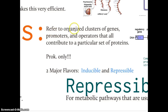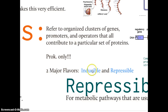An operon is made of a combination of structural genes that actually produce the protein, promoters which are DNA sequences that serve as attachment points for RNA polymerase, and operators — a new term — which are sequences of DNA within the promoter to which a special regulatory protein attaches. This is only seen in prokaryotes and there are two major forms: inducible and repressible.